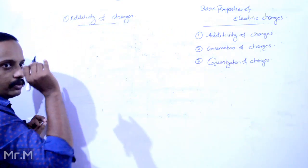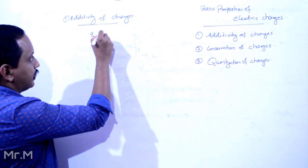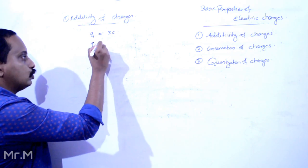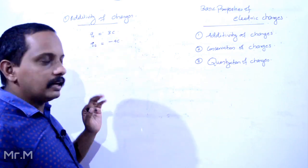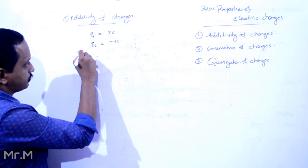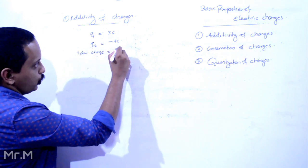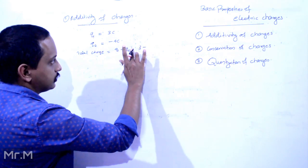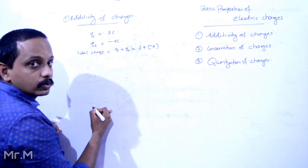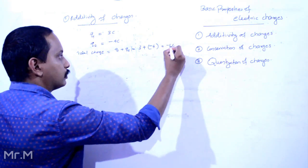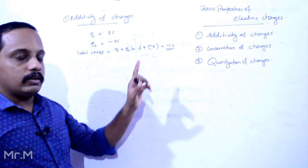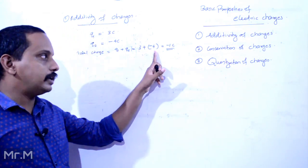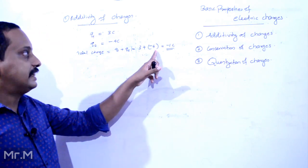For example, we have two charges. One charge is Q1, that is 3. Two charge is Q2, that is minus 4. Now we have total charge. Total charge is Q1 plus Q2, that is equal to 3 plus minus 4. Now we have minus 1. So the result is a negative number of charges.